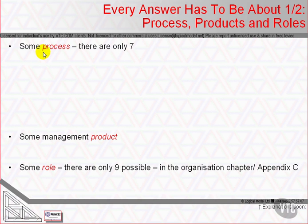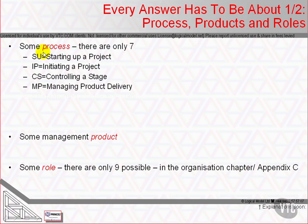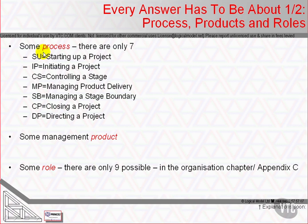Every question has to be about some process. There are seven processes in PRINCE2. There's the starting up a project process, which receives the mandate, builds the team, and identifies what it is that we're trying to achieve. The initiating a project process says how we're going to approach delivering a result.